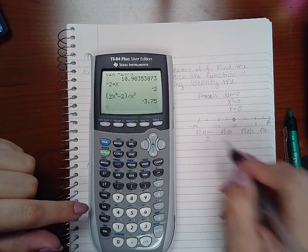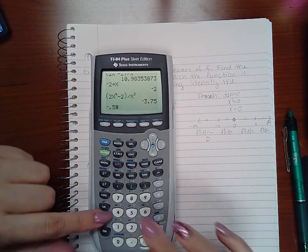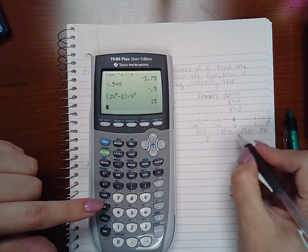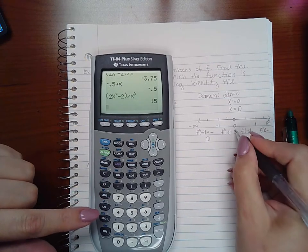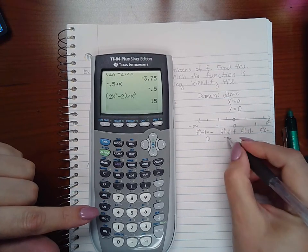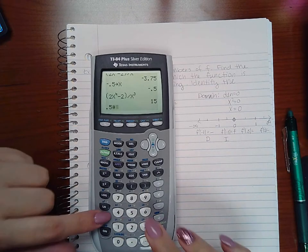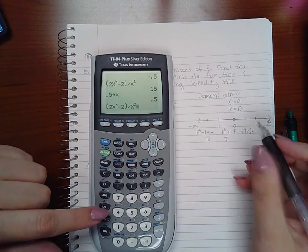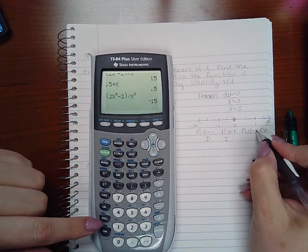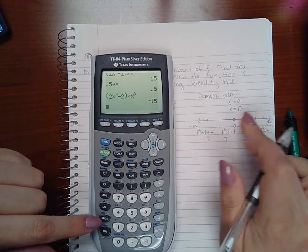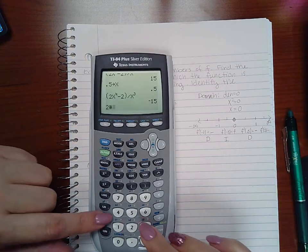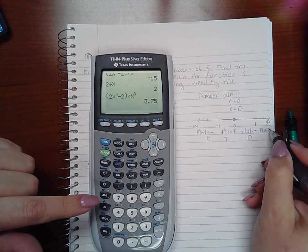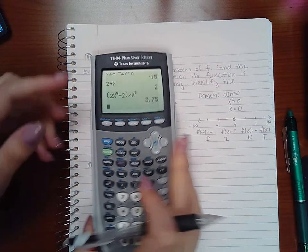So the first interval is decreasing. Testing negative 0.5 gives a positive value, so the second interval is increasing. Testing 0.5 gives a negative value, so the third interval is decreasing. Finally, testing 2 gives a positive value, so the fourth interval is increasing.